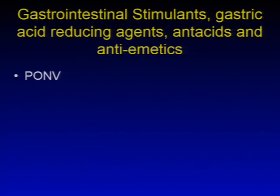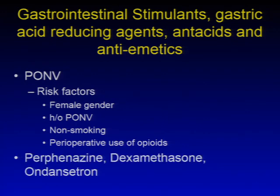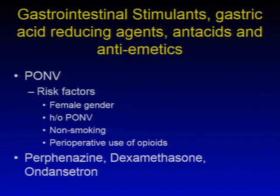With regards to postoperative nausea and vomiting, risk factors include female gender, history of postoperative nausea or vomiting, non-smokers, and preoperative use of opioids. Medications such as prochlorperazine, dexamethasone, and ondansetron are good agents for PONV prevention. Patients with motion sickness may also be at increased risk; scopolamine patches applied preoperatively can be beneficial. However, the 5-HT3 inhibitors such as ondansetron and granisetron — similar to droperidol which carries a black box warning — also have the potential for QT prolongation.